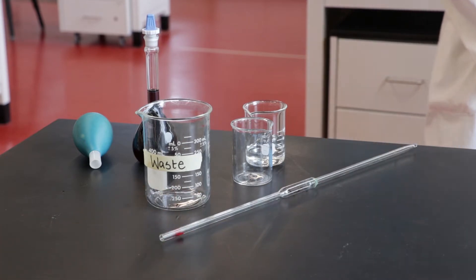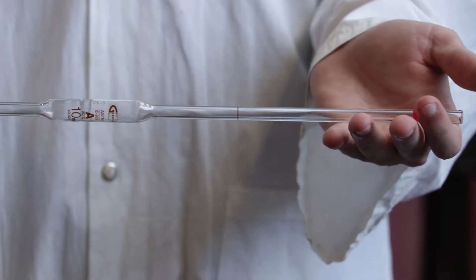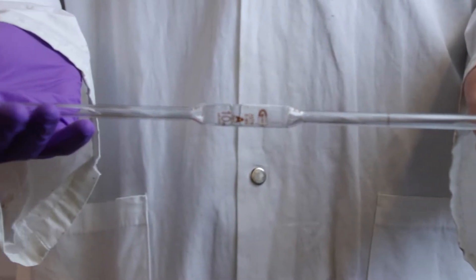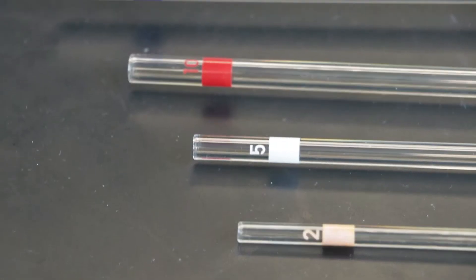In this video we will demonstrate how to use a volumetric pipette. Volumetric pipettes deliver accurate volumes of a solution from one vessel to another. They come in a range of volumes including 5, 10 and 25 milliliters.